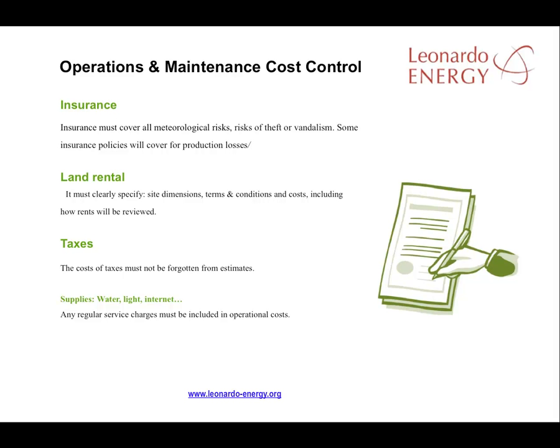The maintenance policy is only sustainable if other issues such as insurance, land rental, utilities and services, and taxes have been adequately catered for. For insurance, the effects of meteorological conditions are a major concern. There also needs to be clarity on rights and responsibilities on the land, on leases and lease terms, and the costs of landscaping. For utilities and services, there needs to be clarity on responsibilities for water, light, the internet, and so on, as well as clarity on responsibilities for the payment of all taxes. These questions vary in different countries.